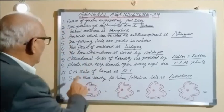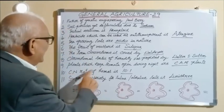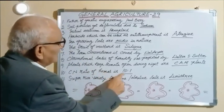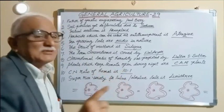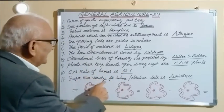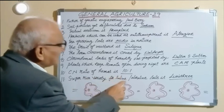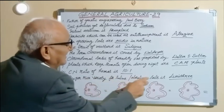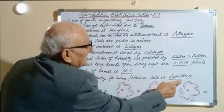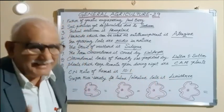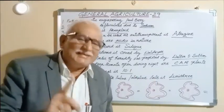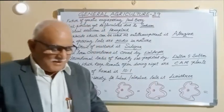The C:N ratio of humus is 10:1. The super rice variety for saline alkaline soils is LUNISHRI-3.